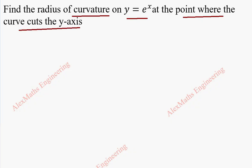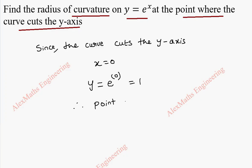When the curve cuts the y-axis, the value of x is 0. By substituting x equals 0 into the equation, we get y equals e to the power 0, which is 1. Therefore, we get the point (0, 1).